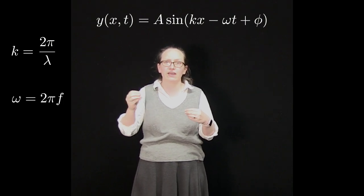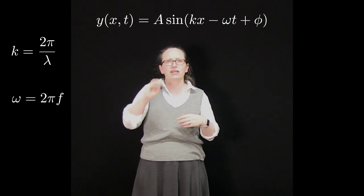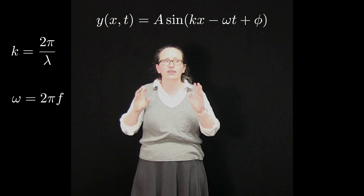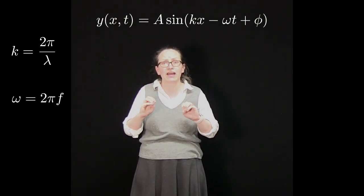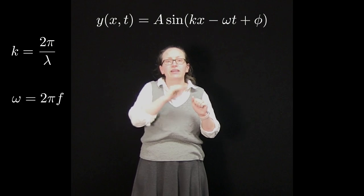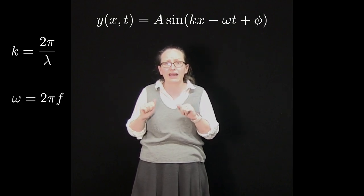φ is the phase constant. This is just there so that we can match any starting conditions that we are given. Now, this equation that we've written down represents a wave traveling in the positive direction, so to the right.